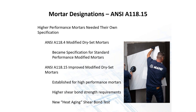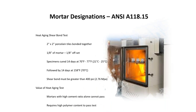The 118.15 standard was created because 118.4 had a very wide performance spectrum — some products barely passed while others performed exceptionally, both called 118.4. The new 118.15 standard establishes high-performance mortars with higher shear strengths and higher compressive strengths, plus a new heat aging test. 118.4 has become the standard for basic or standard modified mortar, while 118.15 is the high-performance tier.